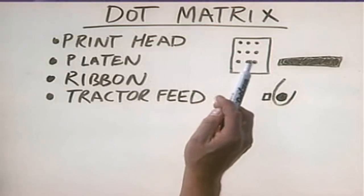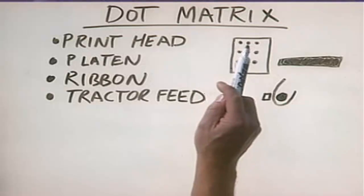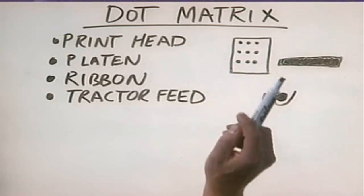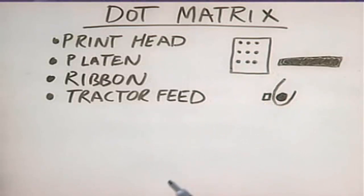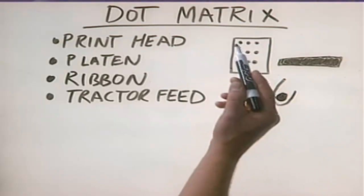A very inexpensive dot matrix printer will only have nine pins. A more expensive, higher quality dot matrix printer might have upwards of 24 different pins.